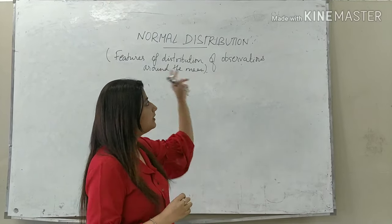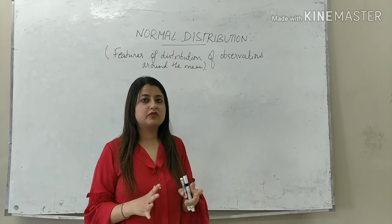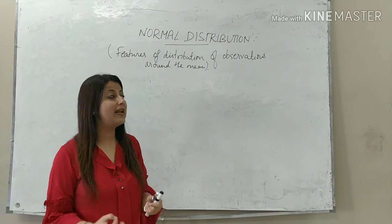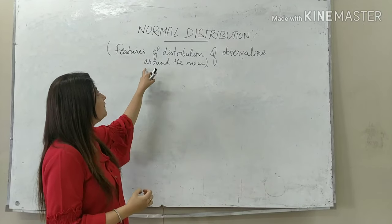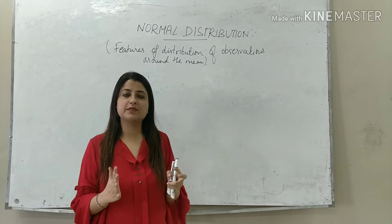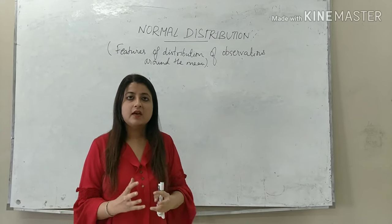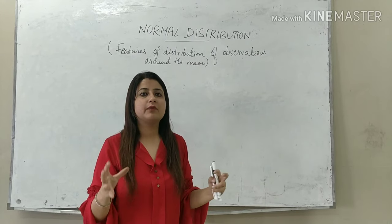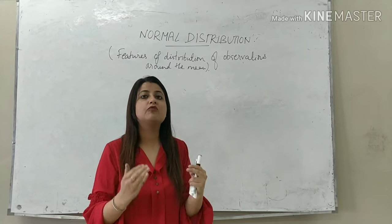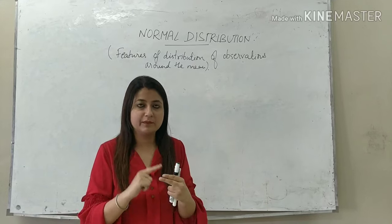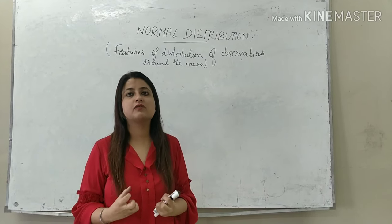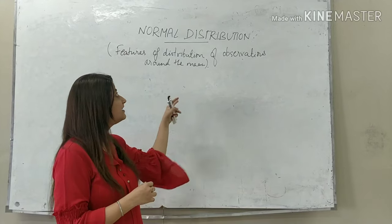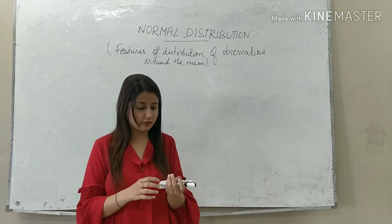What is Normal Distribution? Normal Distribution reflects the features of distribution of observations around the mean. That is, in a set of data, how the observations are distributed around the central value or the mean — what are the characteristics and features of that distribution — is reflected by Normal Distribution.